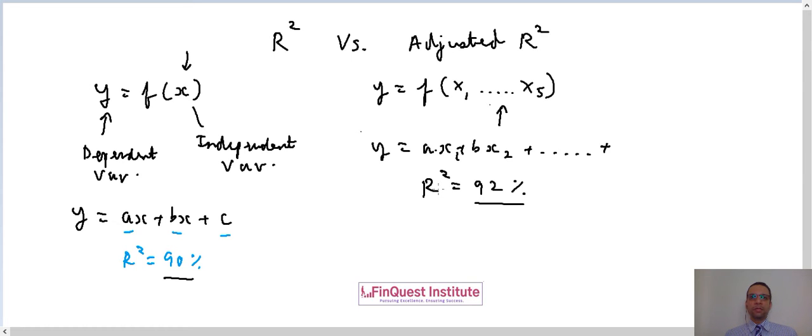In that case, adjusted R square will only take into consideration these two variables and it will not let the other three variables impact the value of the adjusted R squared. That means we are correctly taking into consideration only two variables which are adding to the explanatory power of my model.